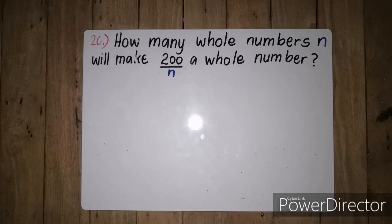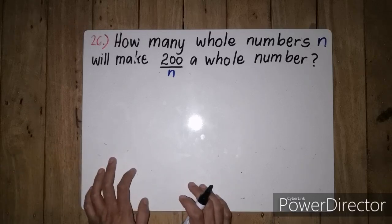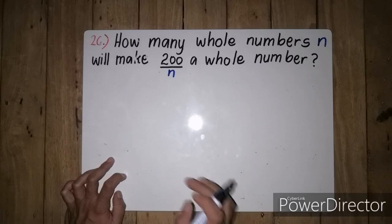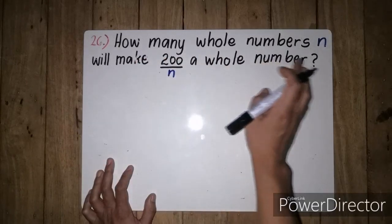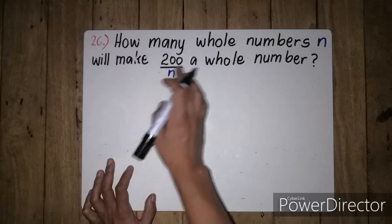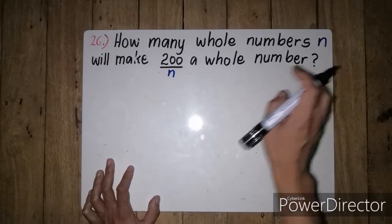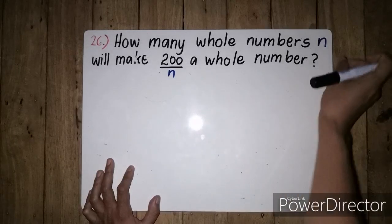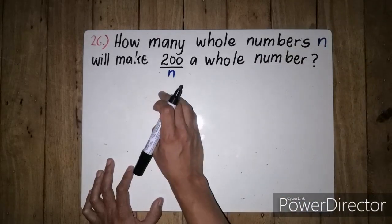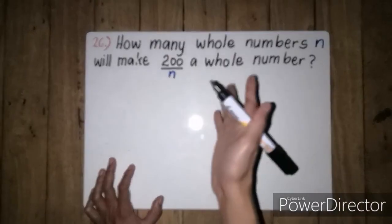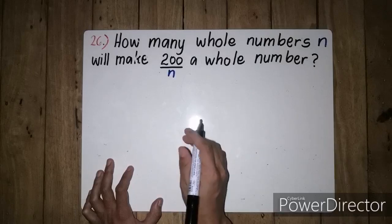Hello Dragon Math Lovers for the 2019 MMC MTAP Elimination for Grade 5 Students. So nasa number 26 na tayo ng 2019 MTAP Elimination. Yung question natin ay: How many whole numbers N will make 200 over N a whole number? Ilang whole number daw na N ang pwede natin i-divide kay 200 para pag dinivide natin si 200 sa whole number na yun, ang magiging sagot pa rin natin ay whole number.